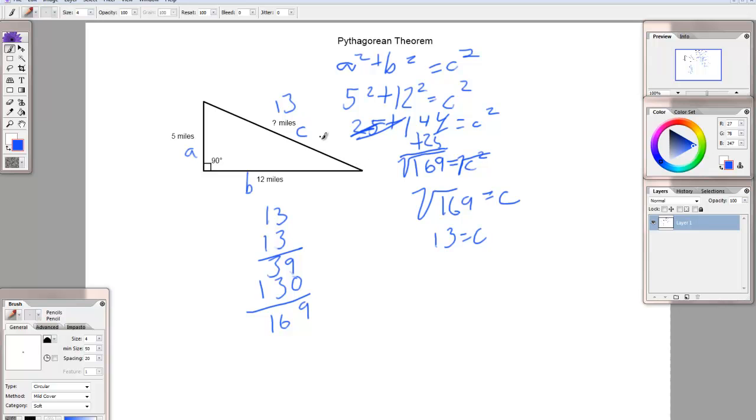There might be a question where they give you the length of the hypotenuse and the length of one of these sides. So, they might say, this is 13 miles, this is 12 miles, and ask you to find out the length of this side.